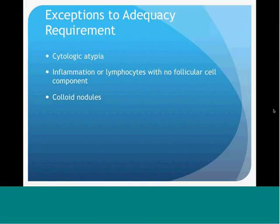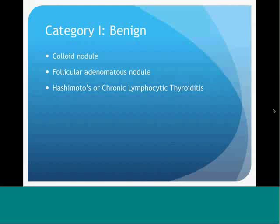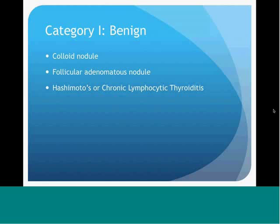In smears where there are copious amounts of colloid, such as in a colloid nodule where you don't see a lot of follicular cells or very few follicular cells, those can also be called benign. Category one is benign, and in this category you see the colloid nodule and the follicular adenomatous nodule, which are basically colloid nodules or goiters.